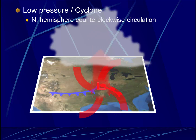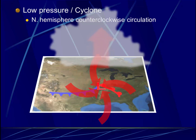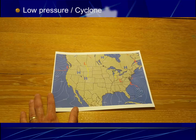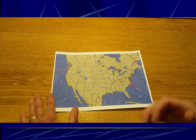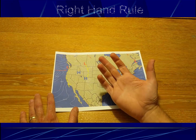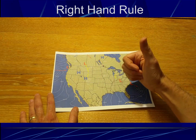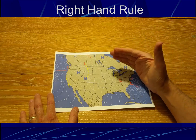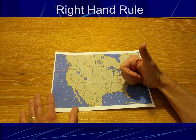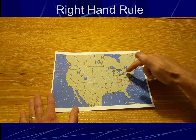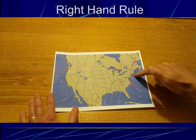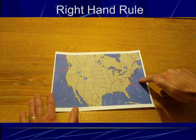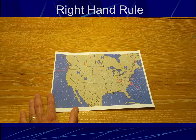It's around low pressures where we see most weather occur. To understand surface wind direction, we can also use the right-hand rule. Remember, your thumb indicates the direction air is moving, so at a low pressure, your thumb should point up, and your fingers curl in a counterclockwise direction.